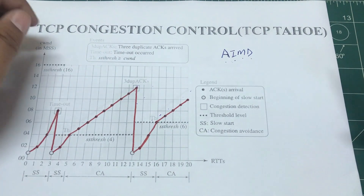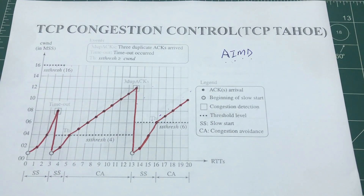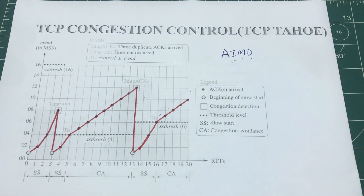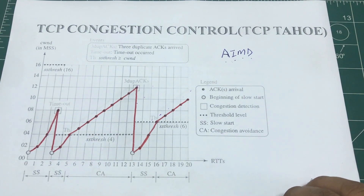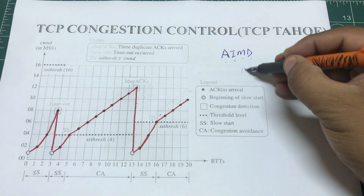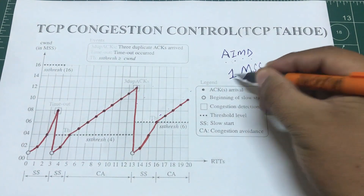TCP Tahoe automatically sets a certain threshold based on the congestion window size. The congestion window size defines how many packets are being sent at once — if the congestion window is six, you send six packets, start a timer, and wait for acknowledgements. The unit used is one MSS, which stands for Maximum Segment Size — this could be 1460 bytes — but we'll just call it one MSS.